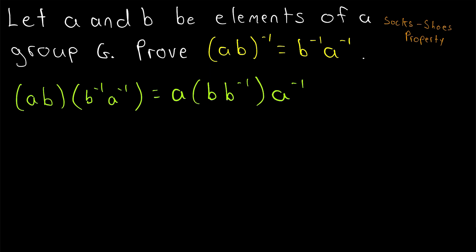And just to point out a small detail, remember, since A and B are elements of a group and groups have inverses, that's how we know these elements B inverse and A inverse exist so that we can use them in our proof. And we can rewrite these parentheses by associativity, which is a group axiom.